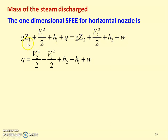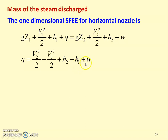For a horizontal nozzle, Z1 equals Z2. Dropping the terms Z1 and Z2 and rearranging: Q equals V2 squared by 2 minus V1 squared by 2 plus H2 minus H1 plus W. Here V2 and V1 are the velocities of the steam at the exit and inlet sections. H2 is the enthalpy at the exit section, H1 is the enthalpy at the inlet section, and W is the work done as the steam flows through the steam nozzle.